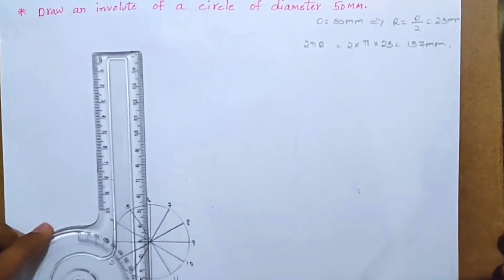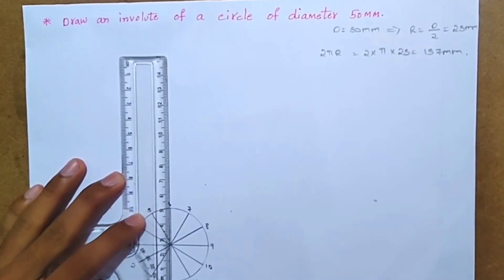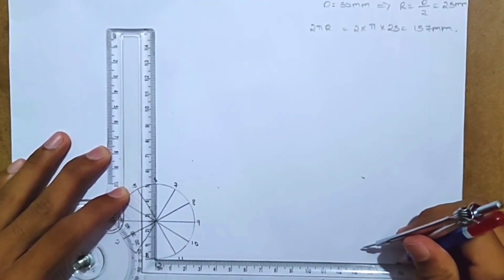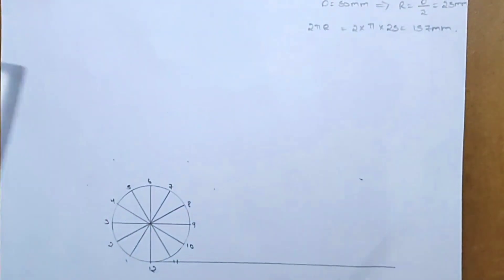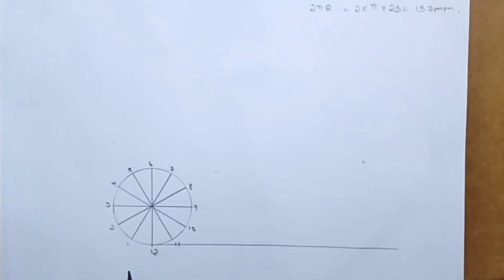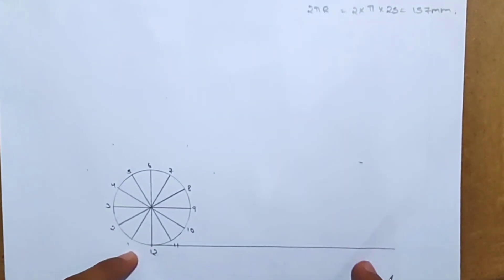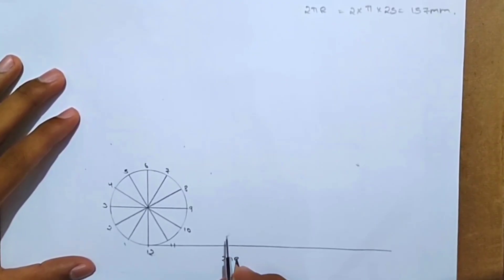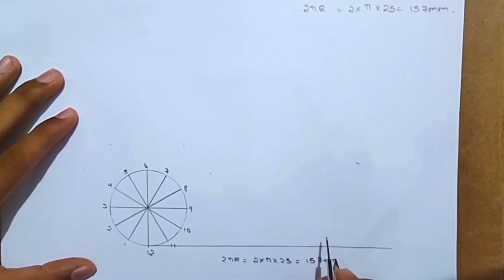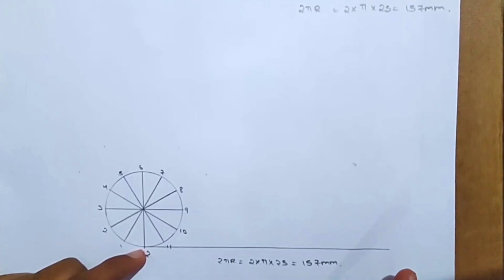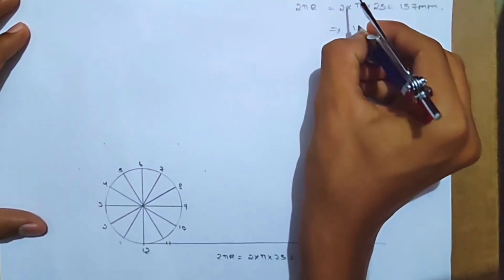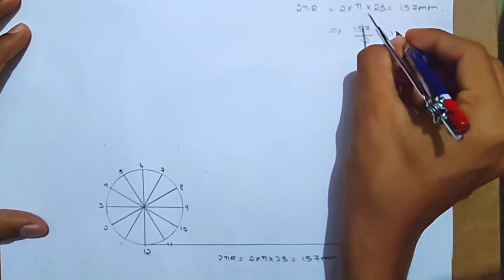So here we draw the horizontal line to exact scale — 157mm total length. The horizontal line is divided into 12 equal parts. So 157 divided by 12 equals approximately 13mm per part.